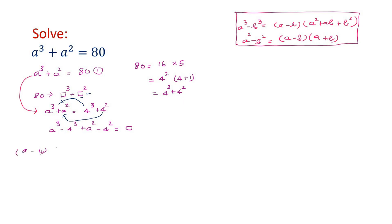So (a - 4)(a² + 4a + 16) for the first two terms here. Then similarly for this, (a - 4)(a + 4), equate it to 0. Again you can see (a - 4) here and (a - 4) here. So you can pull it out, you factor it out.